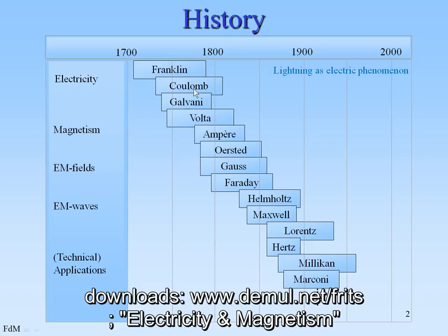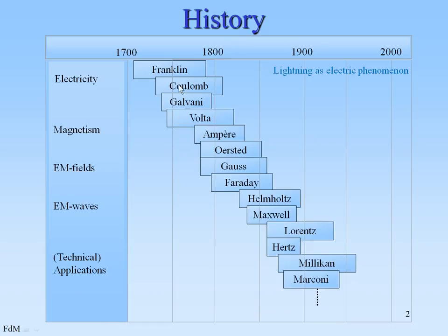Several years later the second important person appeared on the scene, and that was Coulomb. Coulomb was the first one to work with electric charge, and he derived Coulomb's law — the attraction and repulsion law for electrical charges.